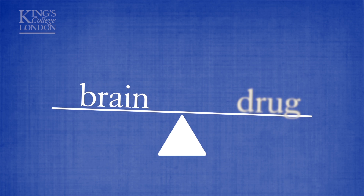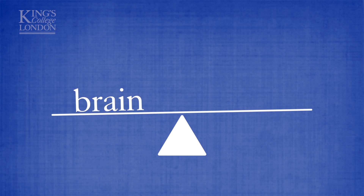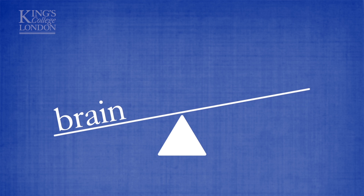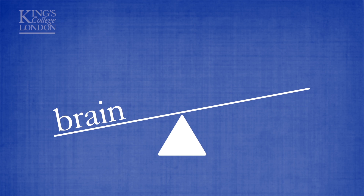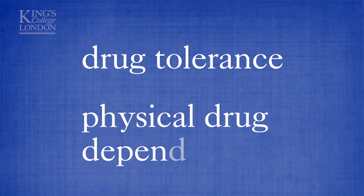But if we then stop taking the drug, our brain is no longer in balance, and it can take a really long time for the brain to readapt. In psychopharmacology, we refer to these processes as drug tolerance and physical drug dependence.